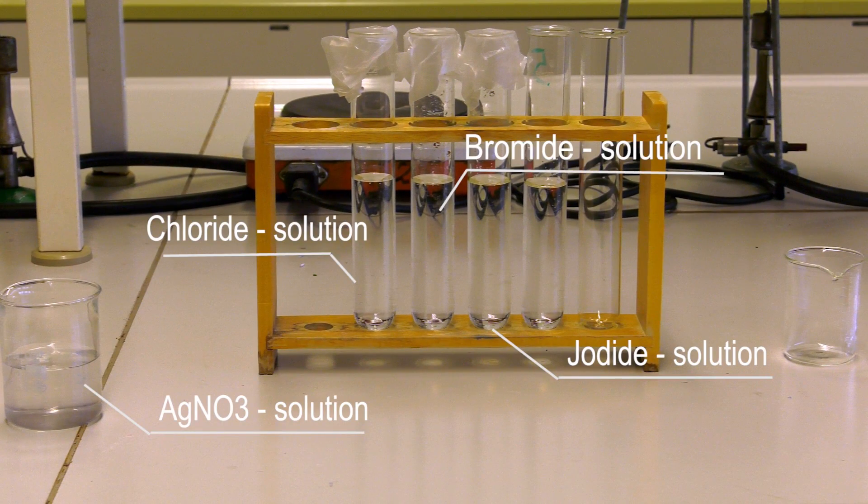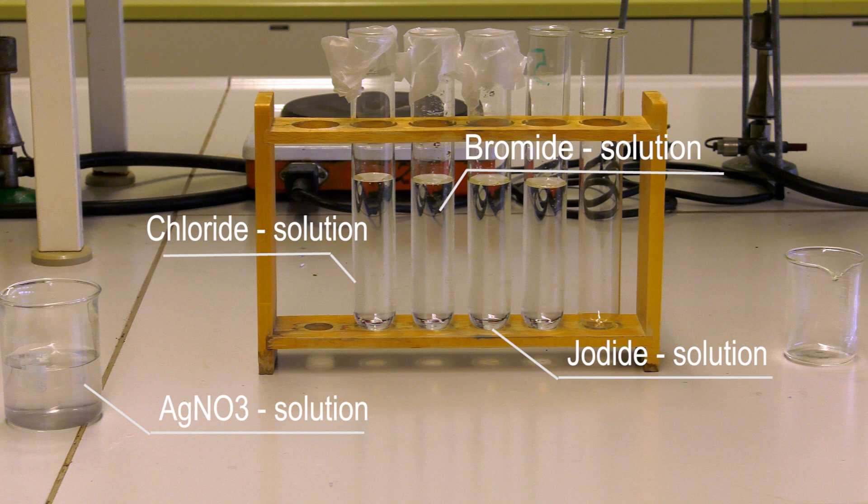For the detection of chloride, iodide and bromide, we need silver nitrate, ammonia, sodium chloride, sodium iodide and sodium bromide.